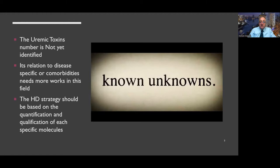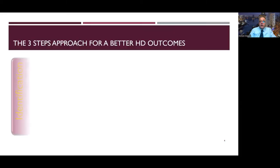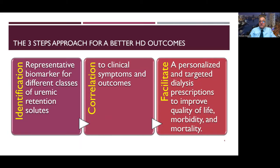The hemodialysis strategy should be based on the quantification and qualification of each specific molecule. The three-step approach for better hemodialysis outcome begins with identification of novel biomarkers for different classes of uremic toxins — meaning medium, size, and larger molecules — and their correlation to clinical symptoms and outcomes.